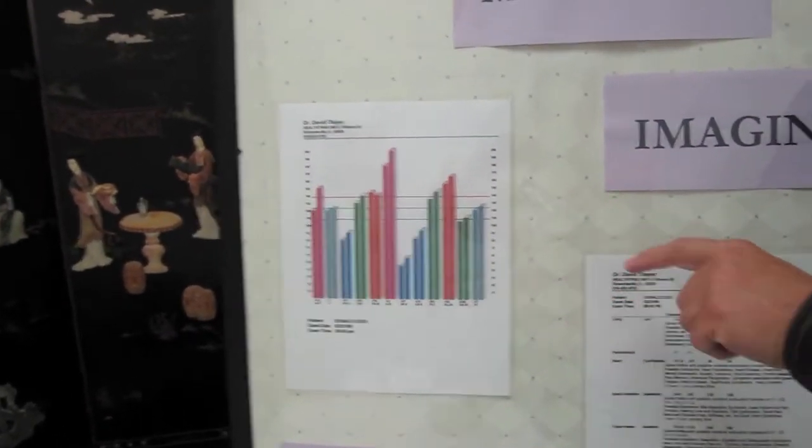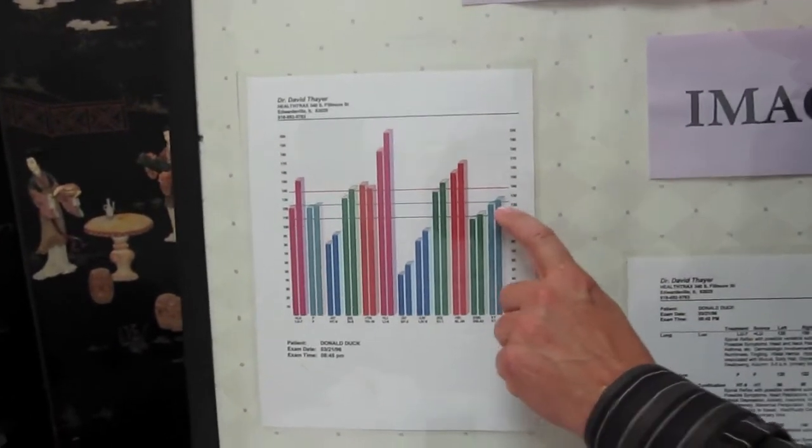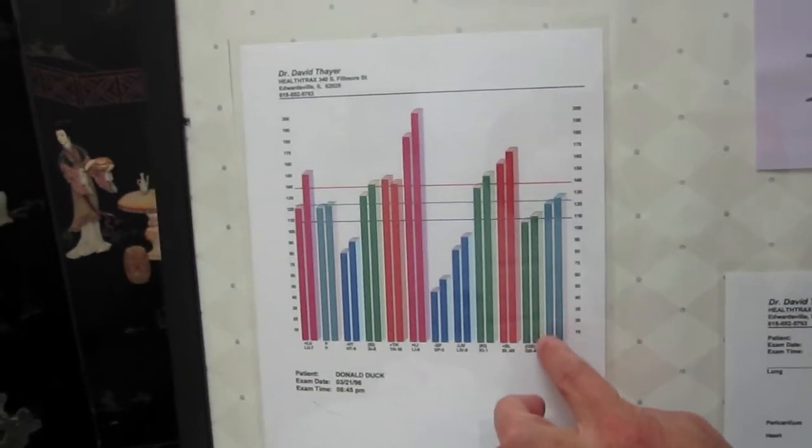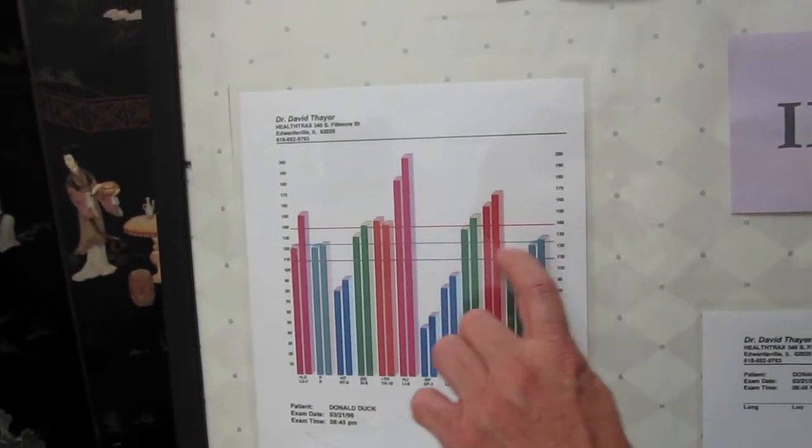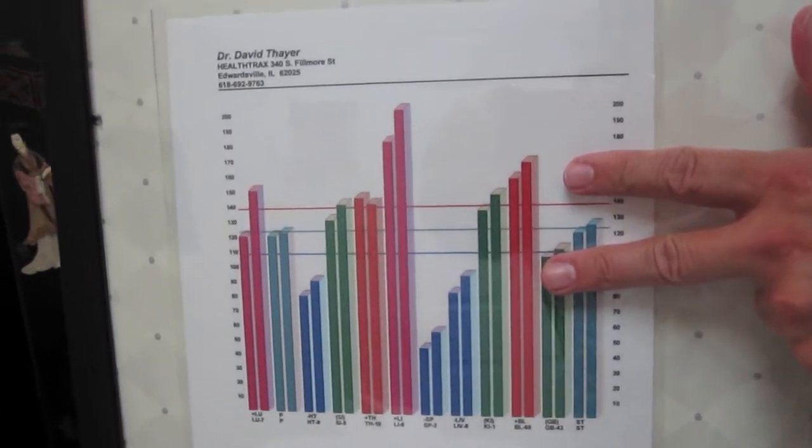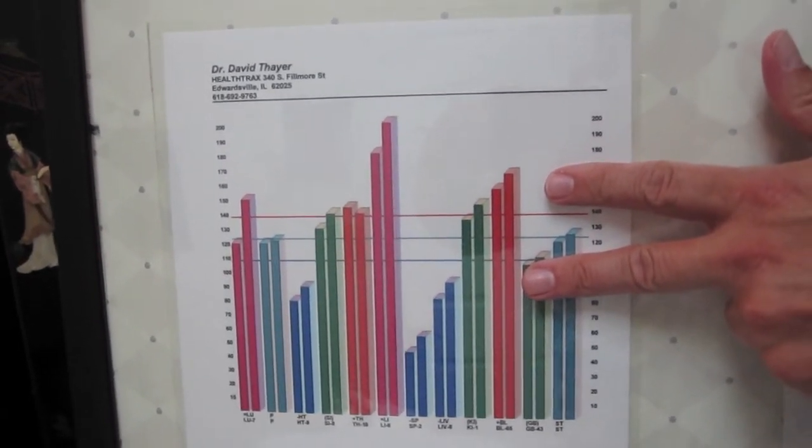So ideally, when it comes to acupuncture, what we want to do is be balanced with all these meridians. You have 12 major meridians, and you have the left and right of each side. This line here in the middle is your average, and as long as you fall within these two lines, that's where you want it to be at, and that means that's acceptable.